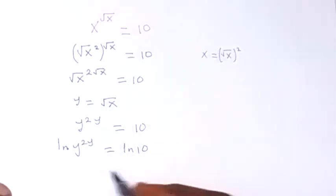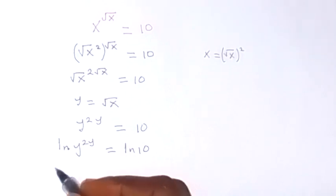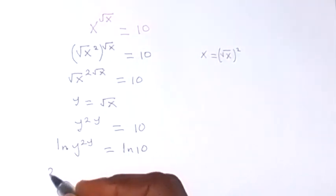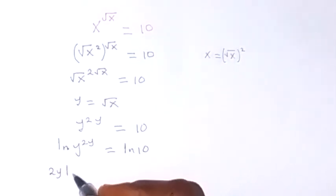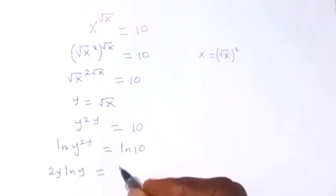And from the law of logarithms, this power here, we can take it to the back. And we have 2y, then ln y will be equal to ln 10.